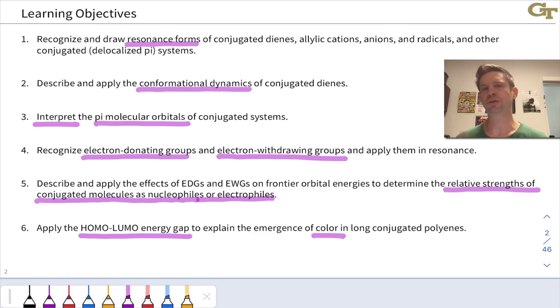We'll take a look at the conformational dynamics of conjugated dienes. A lot of conjugated systems have alternating single and double bonds, and those single bonds have some interesting conformational aspects, and so we'll explore those a little bit.